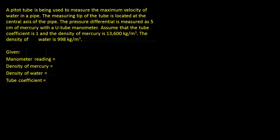We assume that the tube coefficient is 1 and the density of mercury is 13,600 kilograms per cubic meter. The density of water is 998 kilograms per cubic meter.